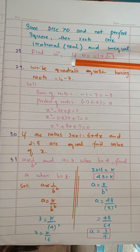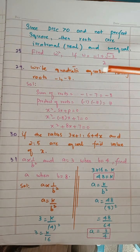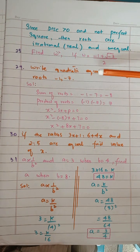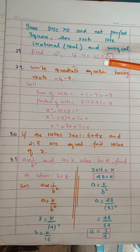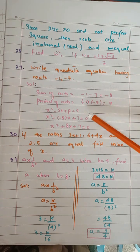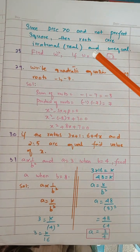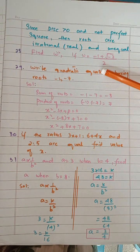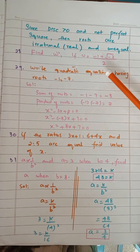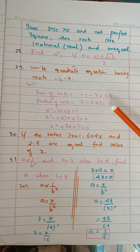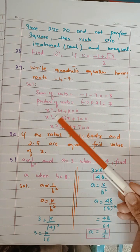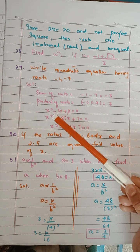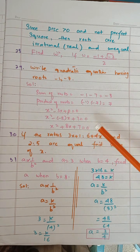Next, question 28 — write the quadratic equation having given roots. We have already done this in a group. Some students skip this portion and don't write the equation, but it clearly says 'write the quadratic equation.' First, sum the roots: minus 1 plus minus 7 is minus 8. Product of roots is 7. Put minus 8 here — remember, it will be minus, not positive. Minus minus is plus. This is your simple equation.